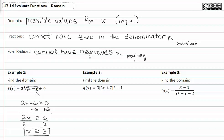In example two, we need to find the domain of three times the absolute value 2x plus seven squared minus four. Since there are no fractions and there are no radicals, all real numbers are okay in this function. The domain is all real numbers.